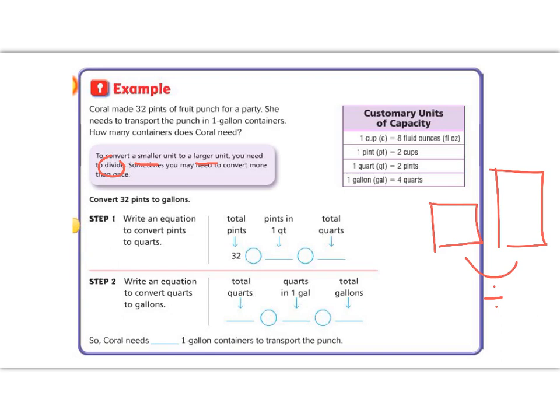It says that when we do this, we may need to convert more than once, and this is a tricky step. So it says we're going to go from pints, and pints are right here, and we need to end in gallons, and gallons are down here.